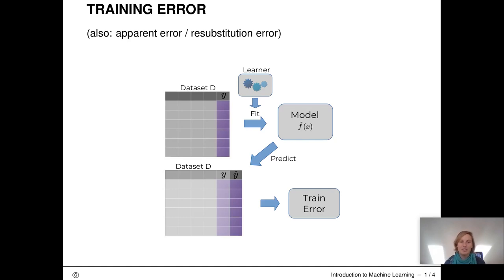In the previous units, we discussed that we want to do performance evaluation in order to figure out how well our model does in prediction. What we want to estimate is the generalization error. Since we cannot compute the generalization error directly, we have to estimate it using data.